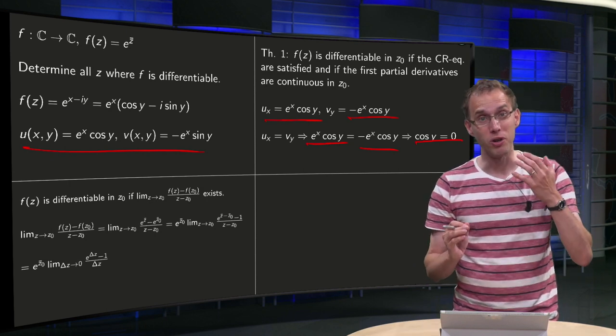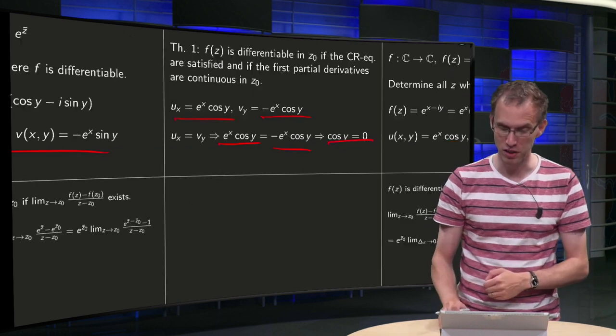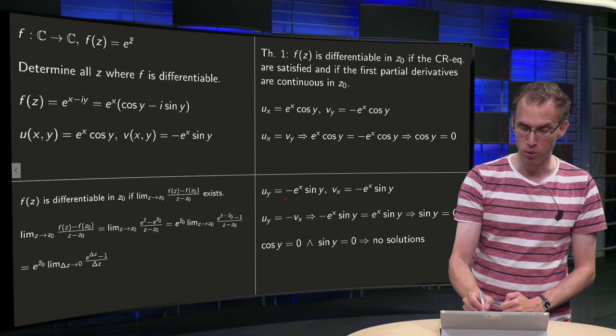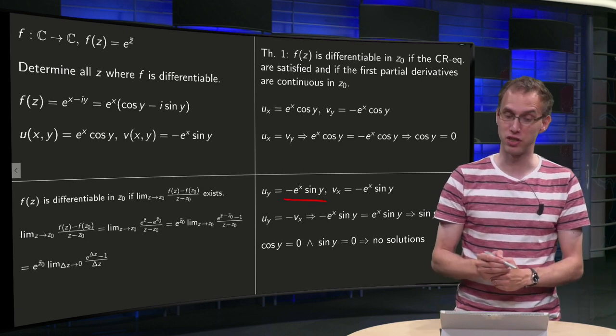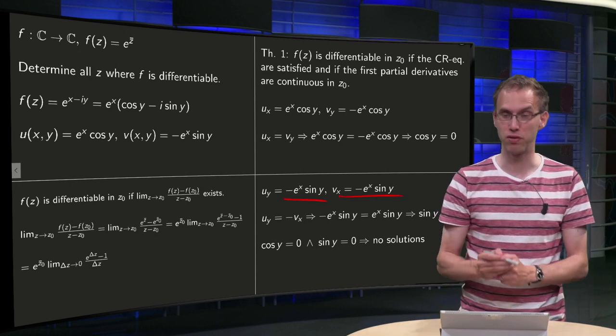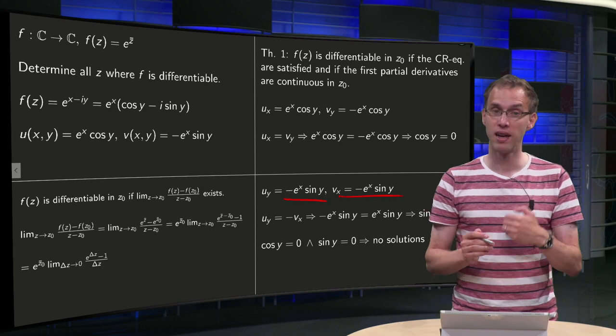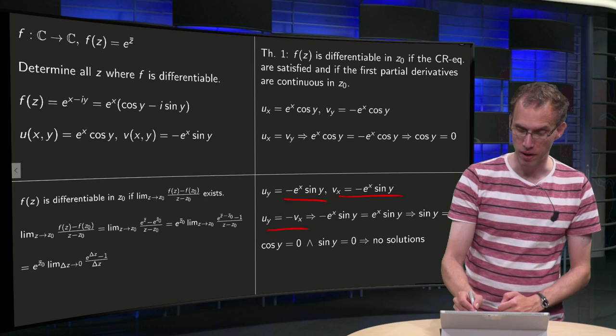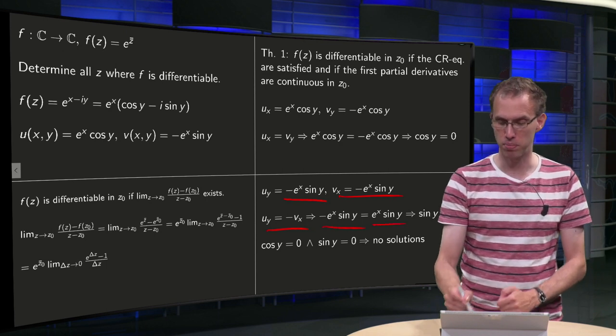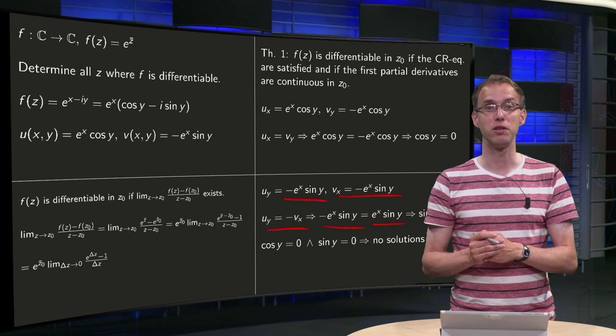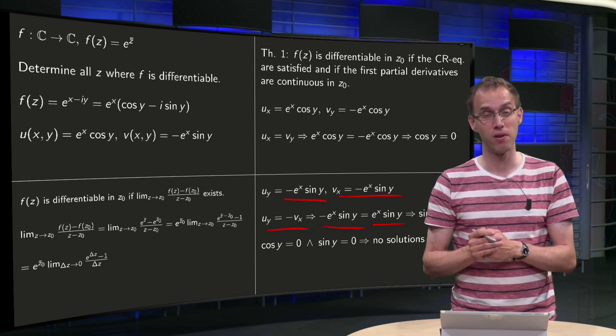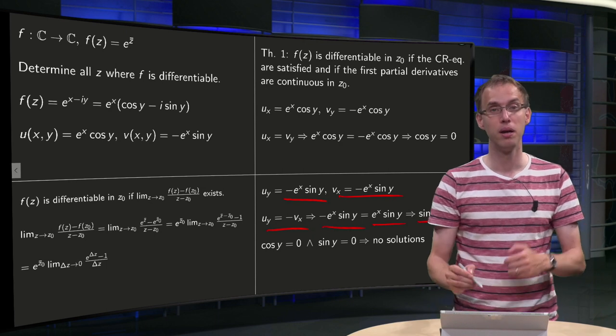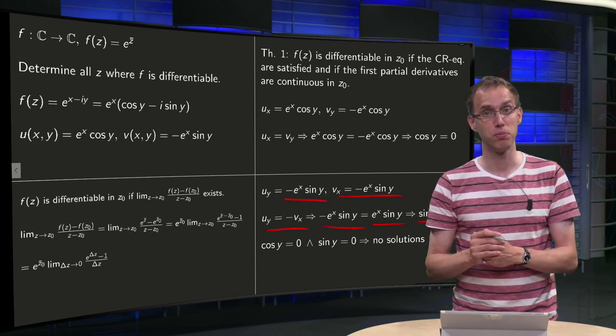But wait a minute, also the second Cauchy-Riemann equation needs to hold. What does this give us? uᵧ equals minus e^x sin y, vₓ equals minus e^x sin y, however uᵧ equals minus vₓ, so minus e^x sin y equals plus e^x sin y, or 2e^x sin y equals zero, so that means that sin y has to be equal to zero, because again e^x is always positive.